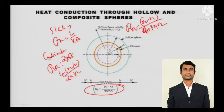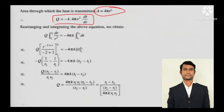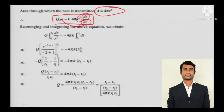We will derive the sphere resistance formula, just as we did for the slab and cylinder. The area through which heat is transmitted is the surface area of the sphere: 4πr². So Q = -k · 4πr² · dT/dr. There is no dx here — like the cylinder, it uses dr because the element has radius and thickness dr.